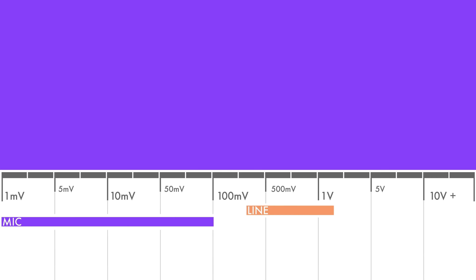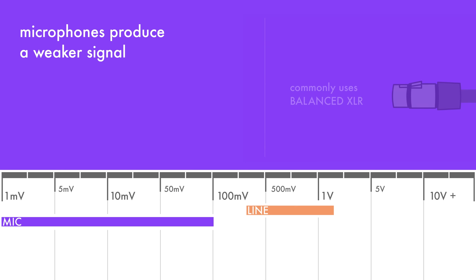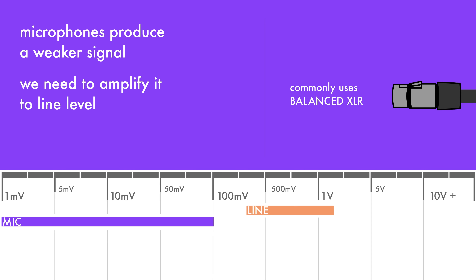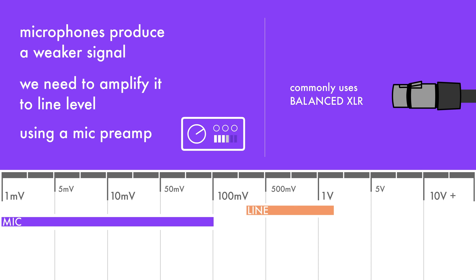Microphones typically produce a weaker signal. The level of that signal is known as mic level, and in order to be able to use microphones with other gear in the studio, we need to amplify that signal to line level. This is why we need a mic preamp, which takes the mic signal and raises it to line level.